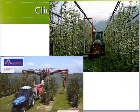Here are pictures of balloon thinner machines, which are large weed whips that knock the flowers off the trees. These have worked pretty well in peaches and in apples.